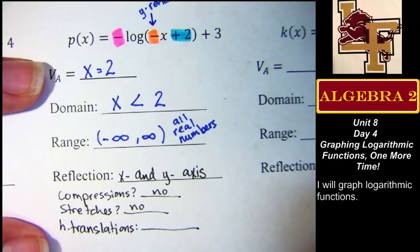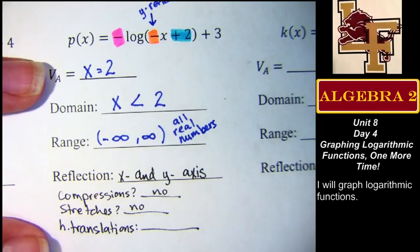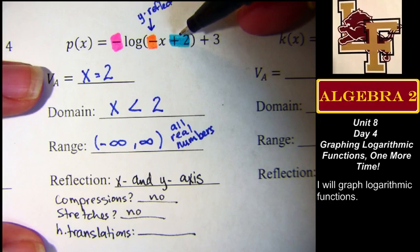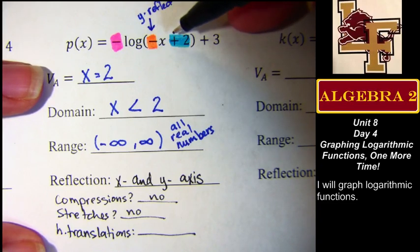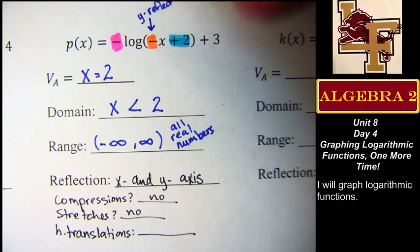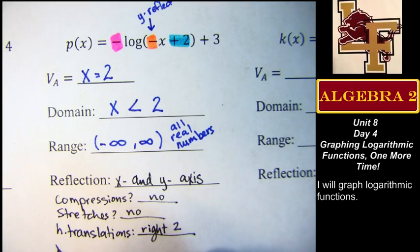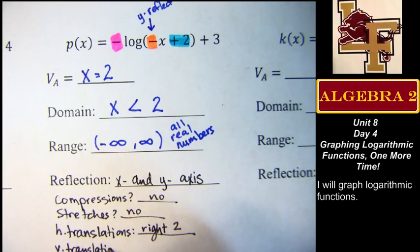Do we have any horizontal translations? Yes. 2? Okay. Which direction? Left or right? Right. It's usually always the opposite, yes? But the negative on the X. But the negative on the X makes it even more opposite than opposite. Yes. It's to the right. You're absolutely correct. Right. 2. Any vertical translations? Up 3. Up 3. Good.